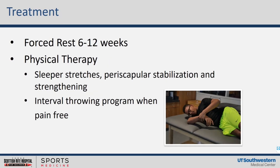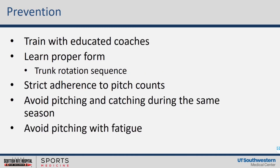Treatment is forced rest for six to twelve weeks, usually more along the lines of twelve weeks. Physical therapy includes sleeper stretches — because they often have glenohumeral internal rotation deficiency — periscapular stabilization, and strengthening of the rotator cuff muscles. An interval throwing program begins when they're pain-free. If a kid comes in super symptomatic, I won't even start an interval throwing program until they're at least six weeks in and have completely calmed down.